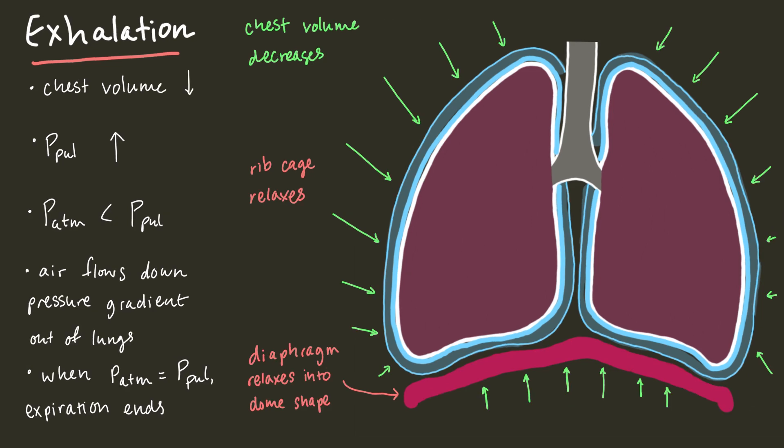When we breathe out, our diaphragm relaxes back into its dome shape and the muscles between our ribs also relax. The chest volume decreases, which increases the intrapulmonary pressure. Suddenly, intrapulmonary pressure is greater than atmospheric pressure, so air flows out of the lungs. Expiration ends when these pressures equalize. And that's how we breathe.